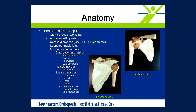First, a brief review of the anatomy. On the scapula, of course, we have the glenoid fossa for its contribution to the glenohumeral joint, the acromion and its attachment to the clavicle at the acromioclavicular joint, the coracoid process with its ligaments, and then also muscular attachments that will be relevant. And then the anterior surface of the scapula forming the scapulothoracic joint.